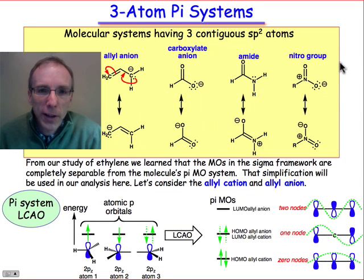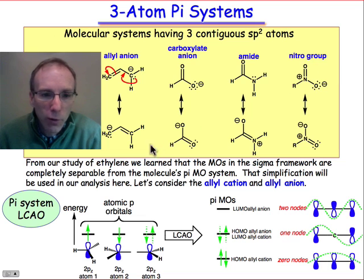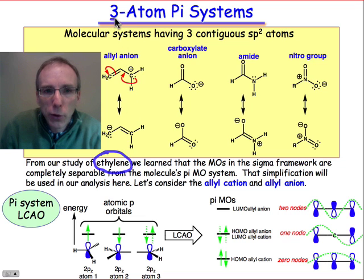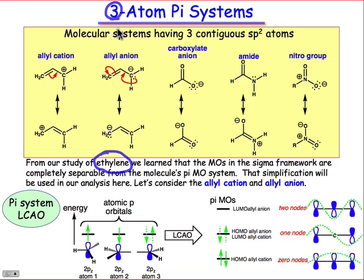In this webcast and the next, we're going to be talking about systems that have extended pi conjugation. We've already talked about the molecular orbitals of ethylene, so the next logical step would be to go from 2 to 3 atom pi systems. In other words, we need molecules that have three contiguous sp2 hybridized atoms.